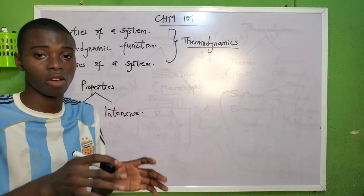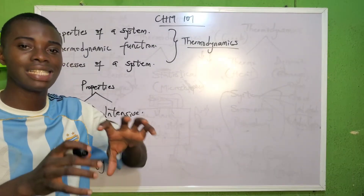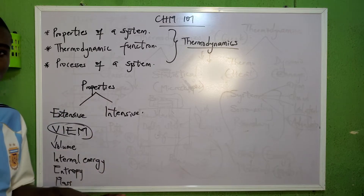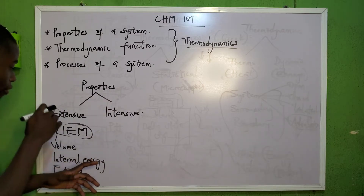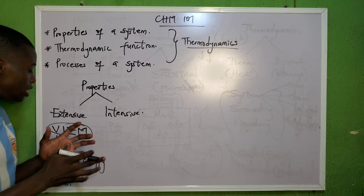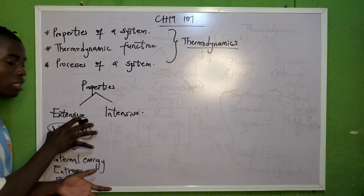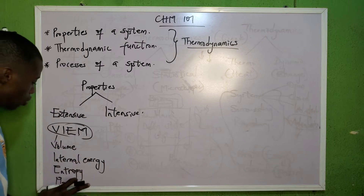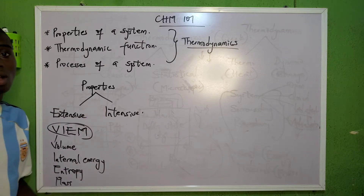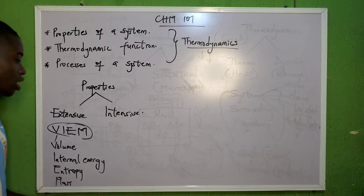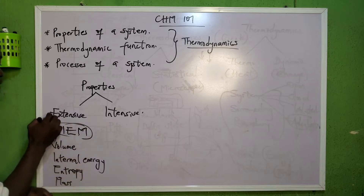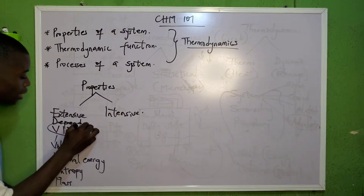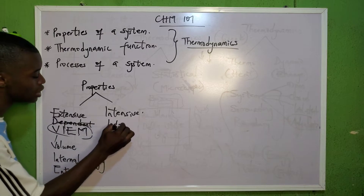These are extensive properties — just a few examples; there are many others. Any property of a system that is dependent on the magnitude of the system or the material under consideration is called an extensive property. For intensive properties, extensive is dependent while intensive is independent.